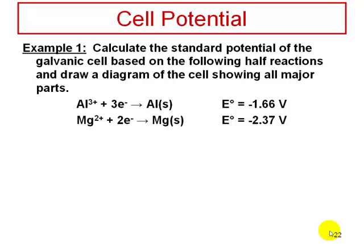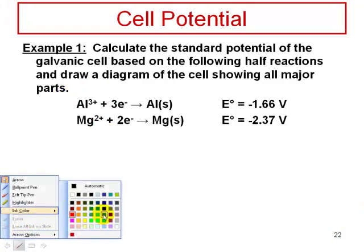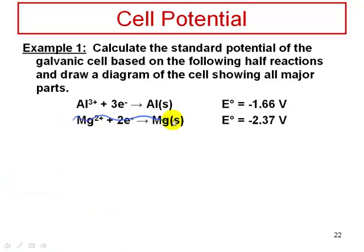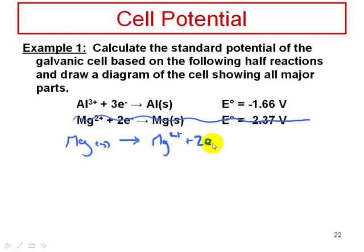For the balanced equation, which half-reaction gets flipped and turned into an oxidation? The magnesium gets flipped. So magnesium solid yields Mg²⁺ plus two electrons — magnesium gets oxidized. The sign of the potential flips as well, so it becomes positive 2.37 volts.